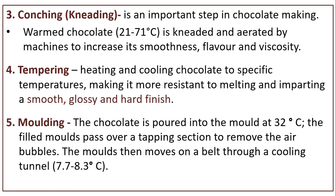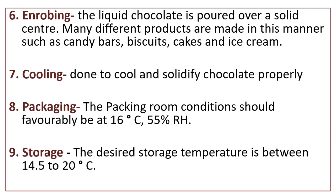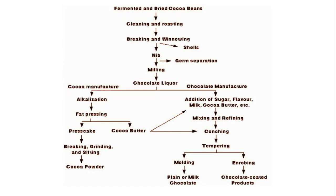Molding: the chocolate is poured into molds at 32°C. The filled molds pass over a tapping section to remove air bubbles, then move on a belt through a cooling tunnel at 7.7 to 8.3°C. Enrobing: liquid chocolate is poured over a solid center; many different products are made in this manner, such as candy bars, biscuits, cakes, and ice cream. Cooling is done to cool and solidify chocolate properly. Packaging: packing room conditions should favorably be at 16°C and 55% relative humidity. Storage: desired storage temperature is between 14.5°C and 20°C.